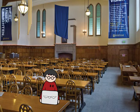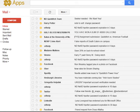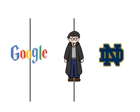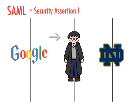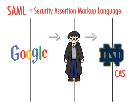Nearly every day, Harry logs into his Gmail account. When he logs in, Google recognizes that his nd.edu account is managed by Notre Dame's identity provider. Google uses a standard format known as SAML to send a request back to Notre Dame. This request contains information about Harry's attempt to log in as well as what he's trying to log into. Notre Dame runs the SAML request through the Central Authentication Service, or CAS.